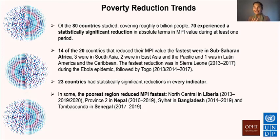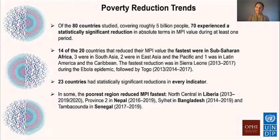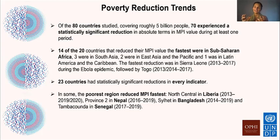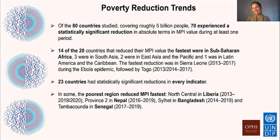Fourteen of the 20 fastest-reducing countries were in sub-Saharan Africa, three in South Asia including India, two in East Asia and Pacific, and one in Latin America. Sierra Leone and Togo had the fastest reductions of all. Twenty-three countries had statistically significant reductions in every indicator, and in some, the poorest regions reduced poverty the fastest — including North Central Liberia, Province 2 in Nepal, Sylhet in Bangladesh, and Tambacounda in Senegal.